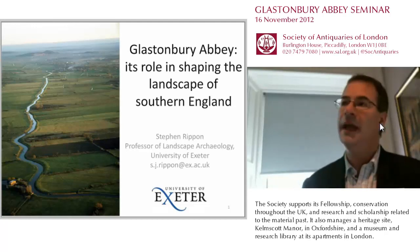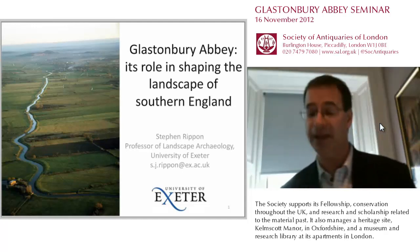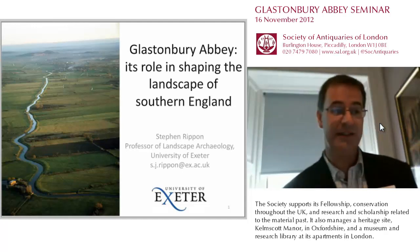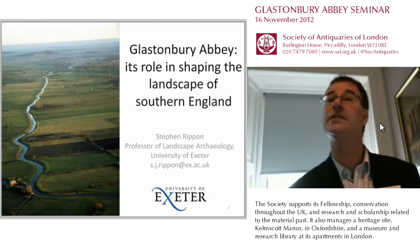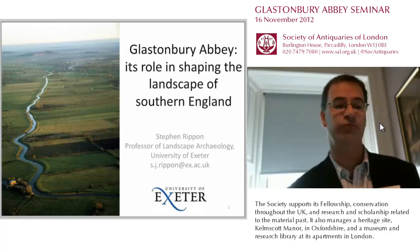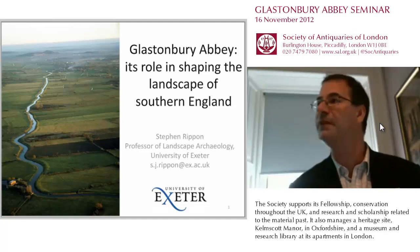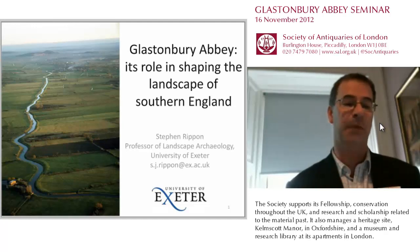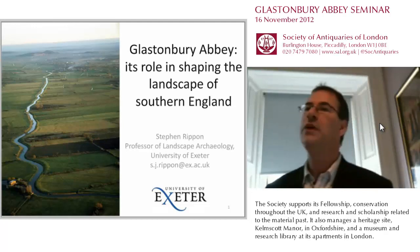In terms of the landscape around Glastonbury today, it is characterised by canalised rivers and also a network of agricultural fields bounded by drainage ditches, sometimes with hedges.